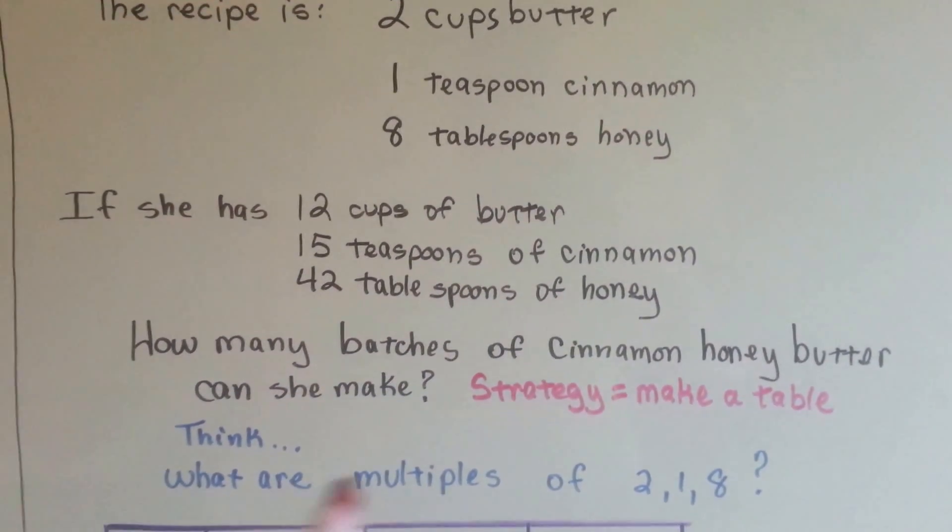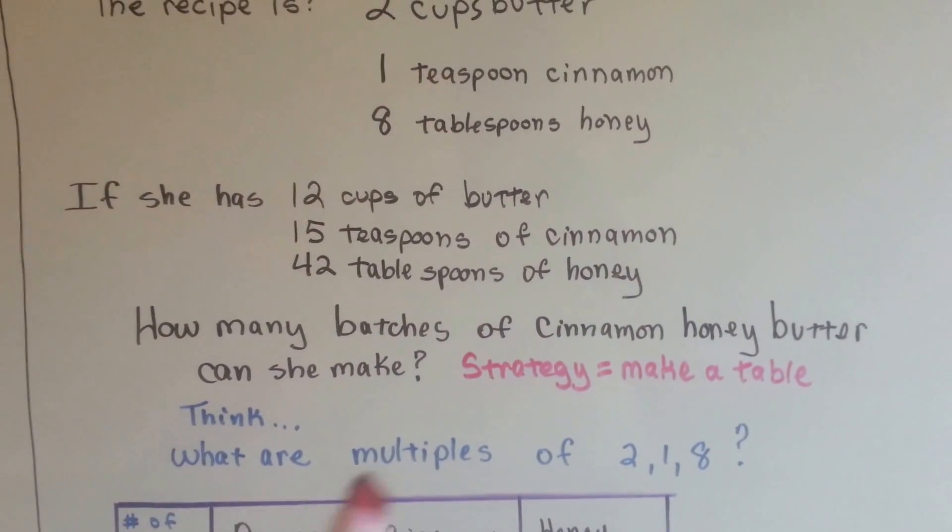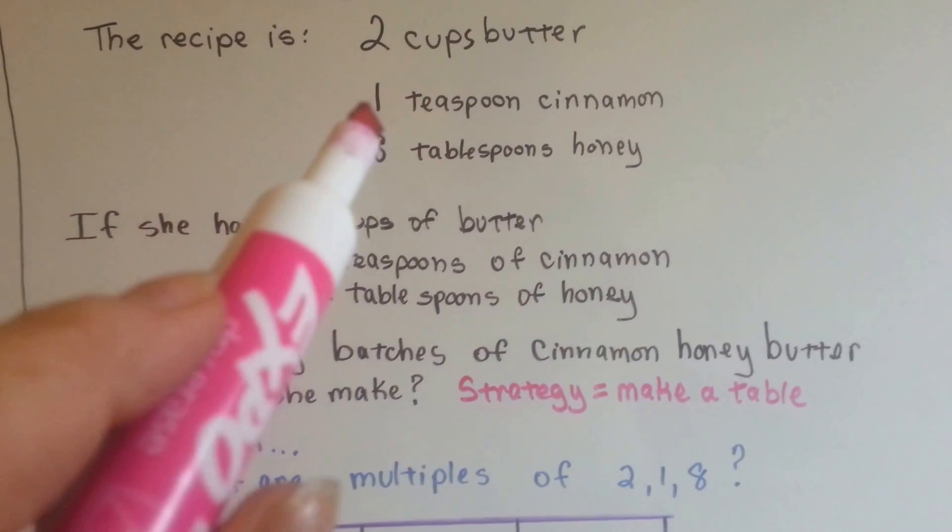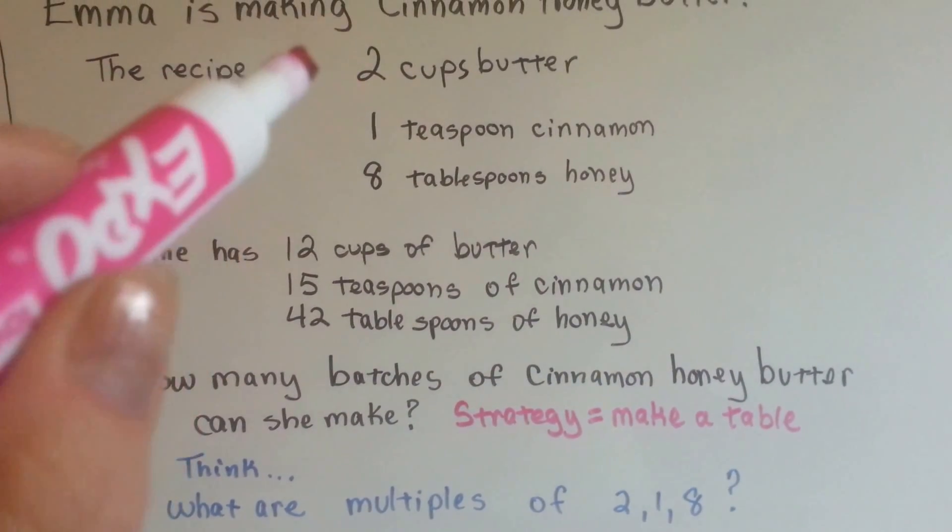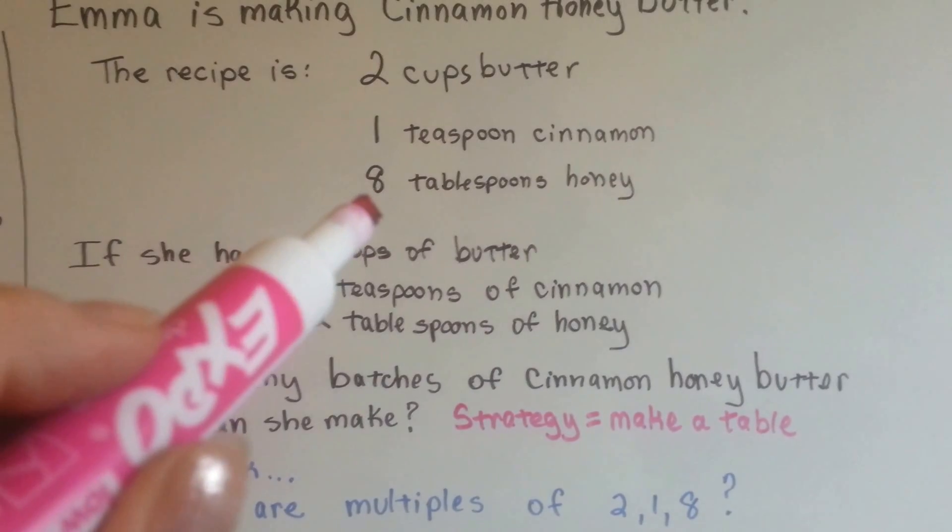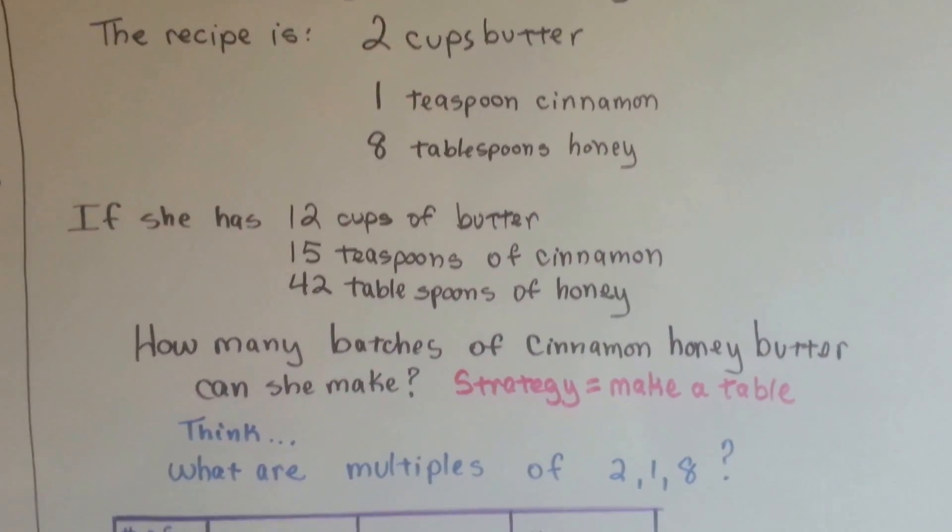Our strategy is going to be to make a table, because if we think about this, we need multiples of 2, 1, and 8. We need to multiply 2 times a number, 1 times a number, and 8 times a number, and it's got to be the same number so that the batch is even. So we made a table.